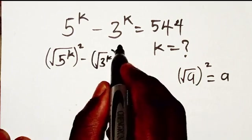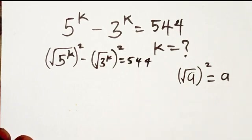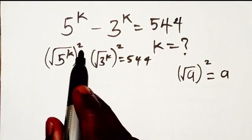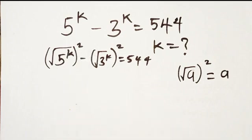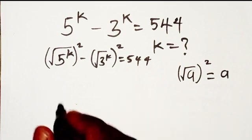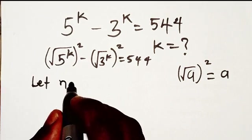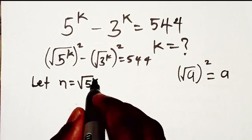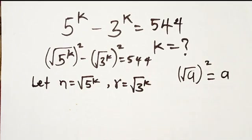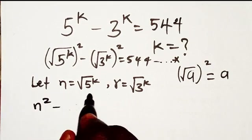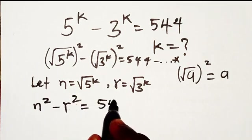So we get (√(5^k))² minus (√(3^k))² equals 544. Now, let's set n equal to the square root of 5^k, and r equal to the square root of 3^k. So anywhere we see √(5^k) we replace with n, and √(3^k) with r. This gives us the equation n² minus r² equals 544.